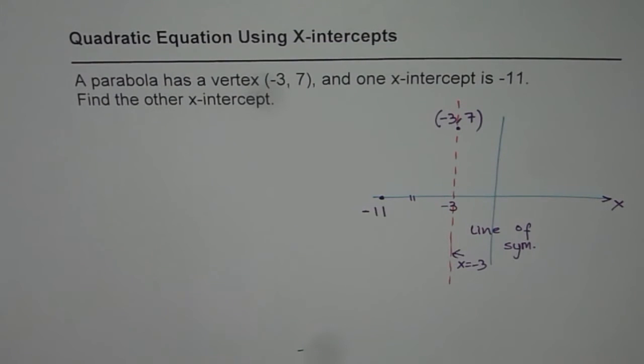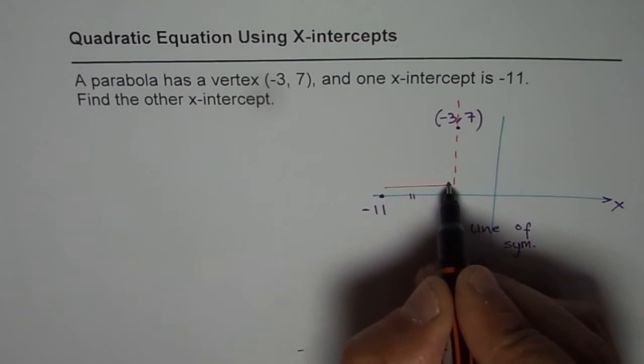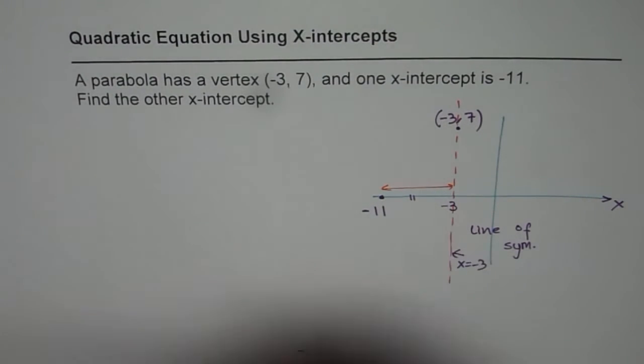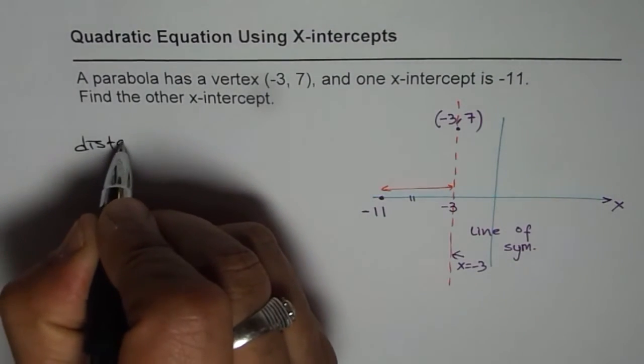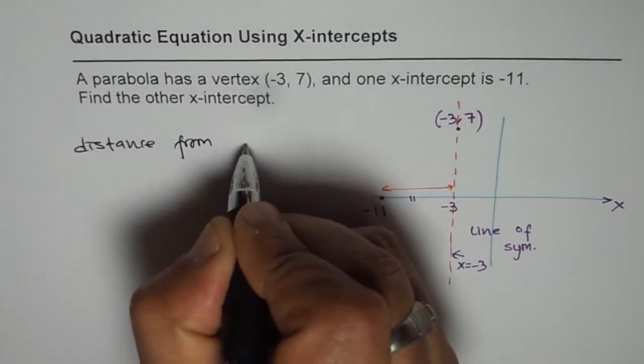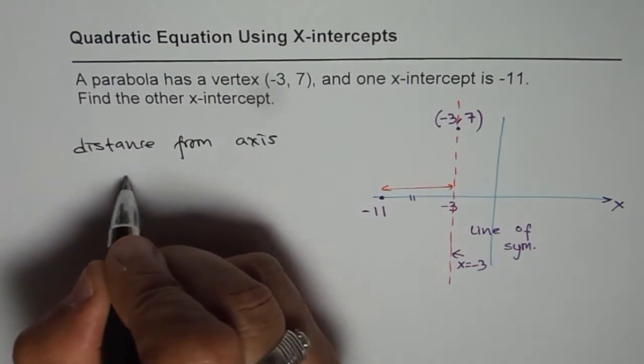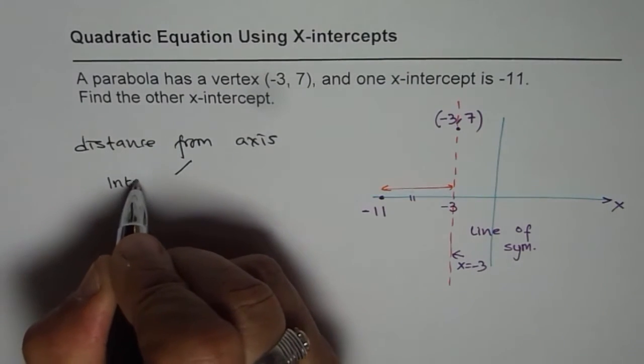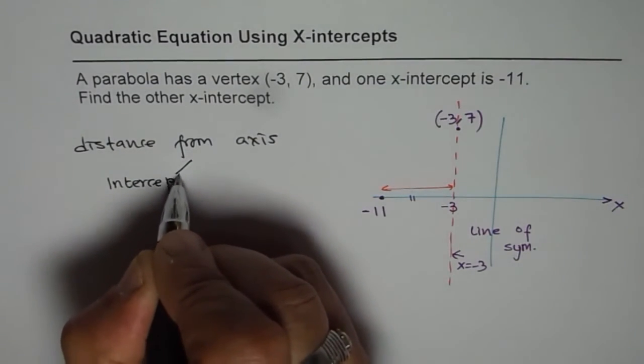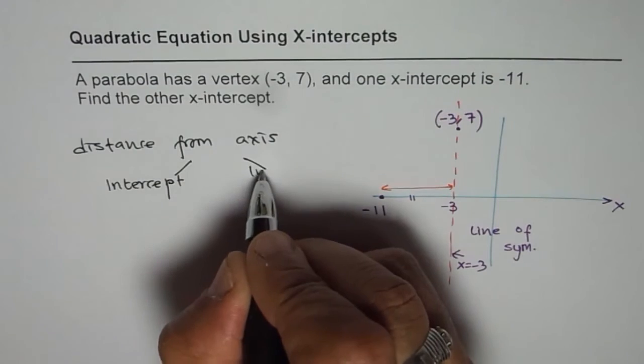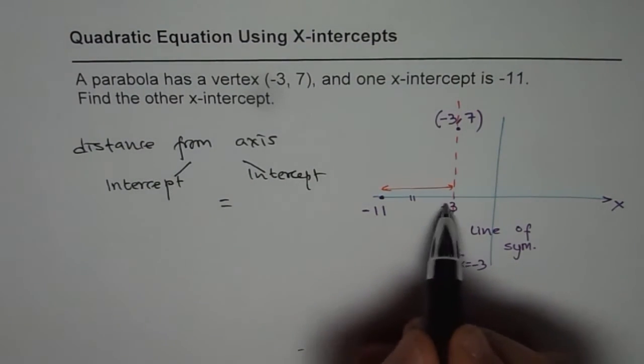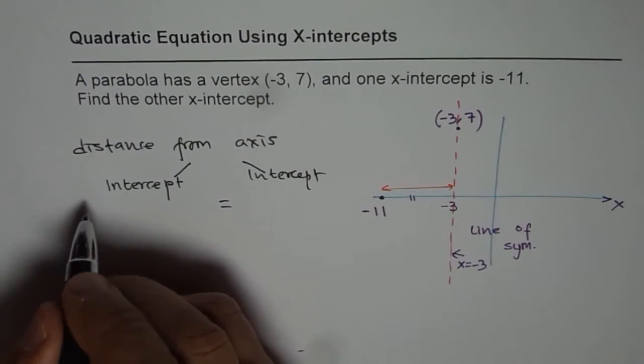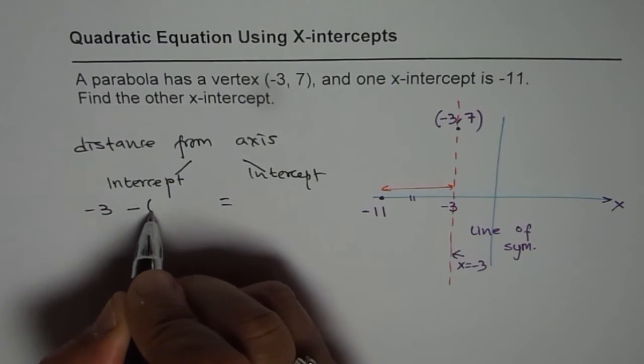So what we can do here is we can find the distance between the two. The distance between the two is, let me call that distance from axis to intercepts. So this is my first intercept. Both distances should be equal because that is the line of symmetry. So what is this distance? This distance is -3 minus of -11.